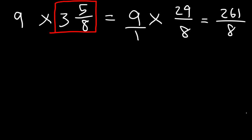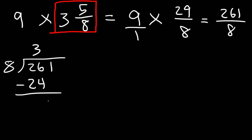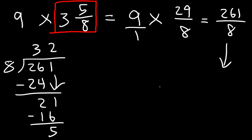Convert 261 over 8 to a mixed number using long division. 8 goes into 26 three times; 8 times 3 is 24, and 26 minus 24 is 2. Bring down the 1: 8 goes into 21 two times; 8 times 2 is 16, and 21 minus 16 is 5. So the answer is 32 and five-eighths.